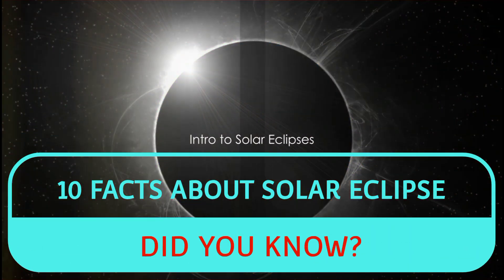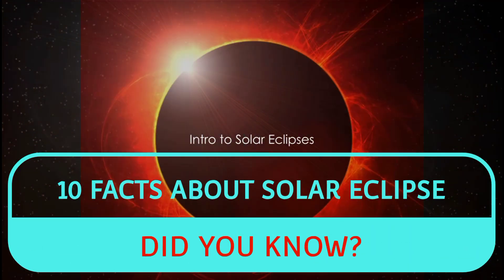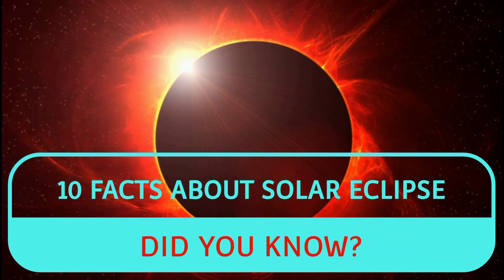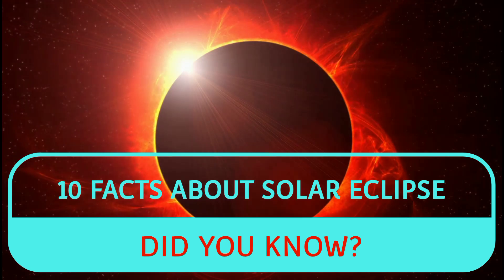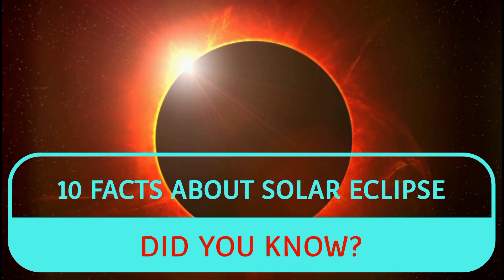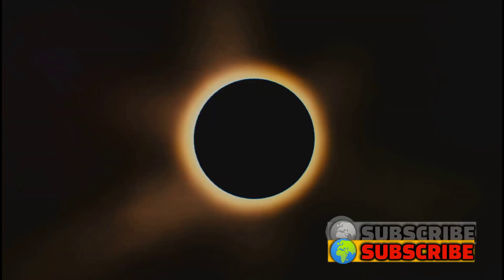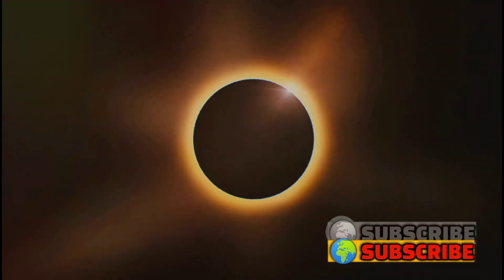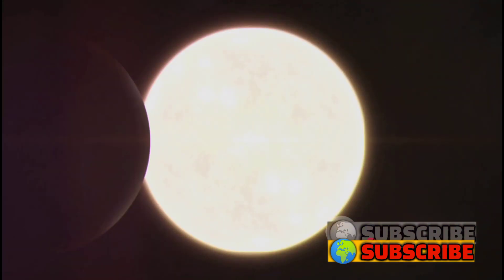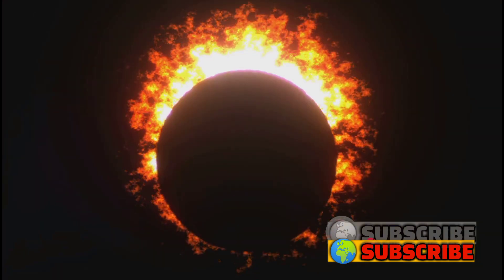Did you know there are different types of solar eclipses? A solar eclipse, a celestial event that has fascinated humans for centuries, occurs when the moon passes between the Earth and the sun, momentarily blocking the sun's light. But not all solar eclipses are created equal. There are three main types: total, partial, and annular.